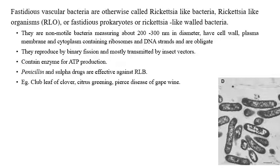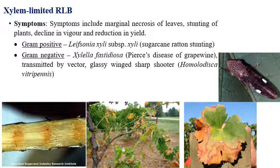This bacteria can be divided into two groups: xylem-limited and phloem-limited rickettsia-like bacteria. For xylem-limited bacteria, the symptoms include marginal chlorosis of leaves, stunting of plants, decline in vigor, and reduction in yield. The leaves become necrotic, plant height is reduced, and due to vigor reduction, yield is also reduced. Xylem-limited bacteria are further of two types: gram-positive and gram-negative.